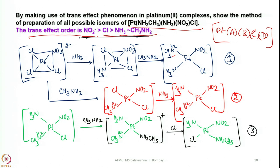So now you know how effectively we have used this trans directing series. We have prepared all three isomers possible for this combination of four ligands of general formula ABCD. Similarly, whatever complexes you come across — having ABCD (3 isomers), A2B2 (2 isomers), or other combinations — you just look into the combination of different ligands having different trans directing abilities and apply this trans effect series to perform substitution reactions.